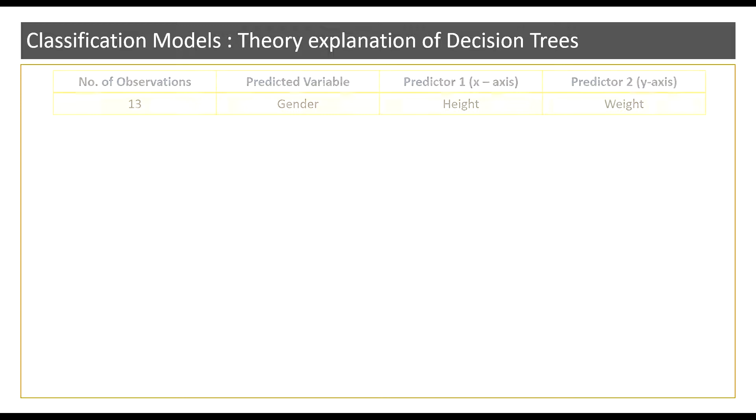Now from the sample data we just saw a few seconds back we know that our predicted variable is gender and my predictors are height and weight respectively. Also note that I have 13 observations here.